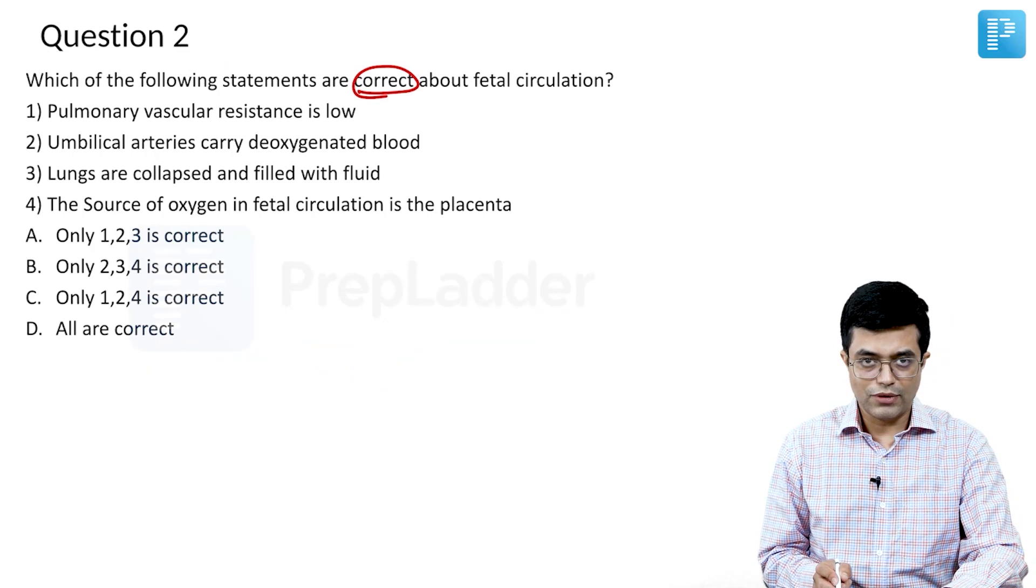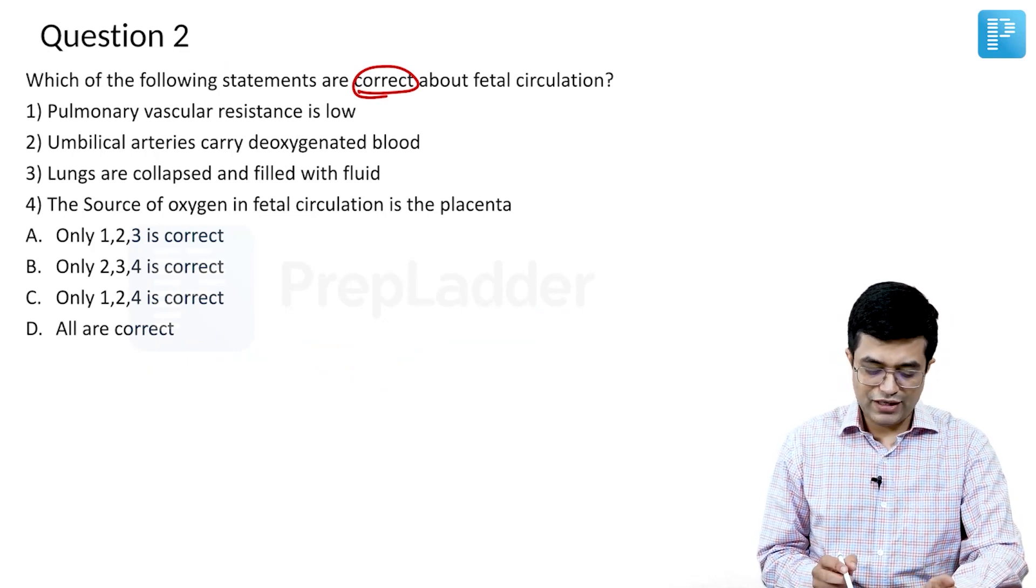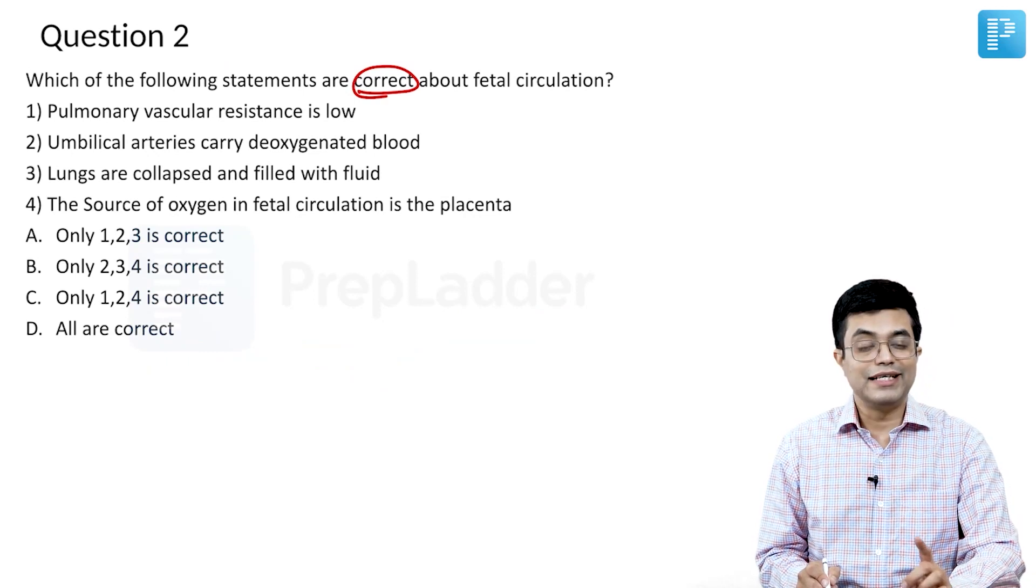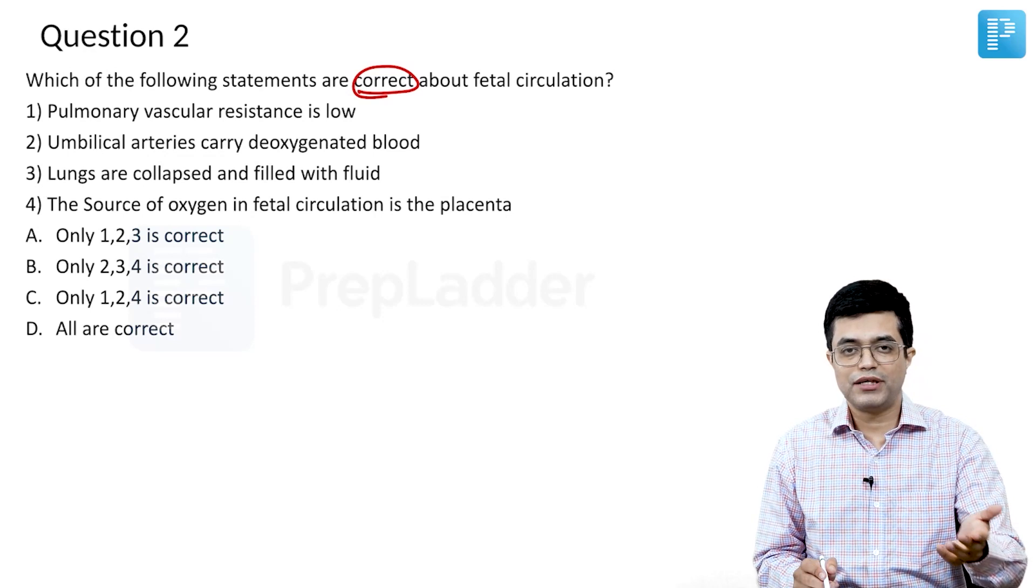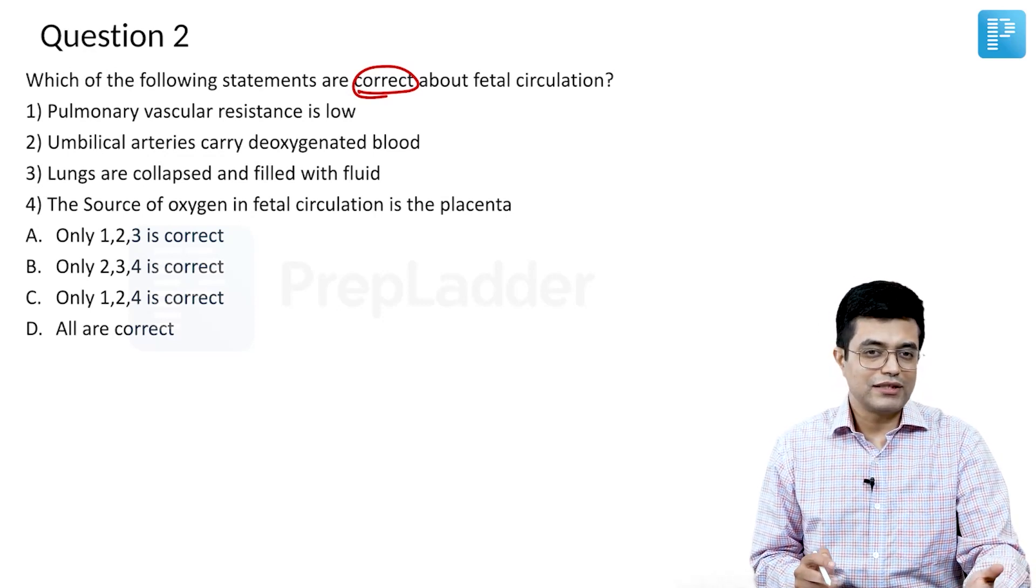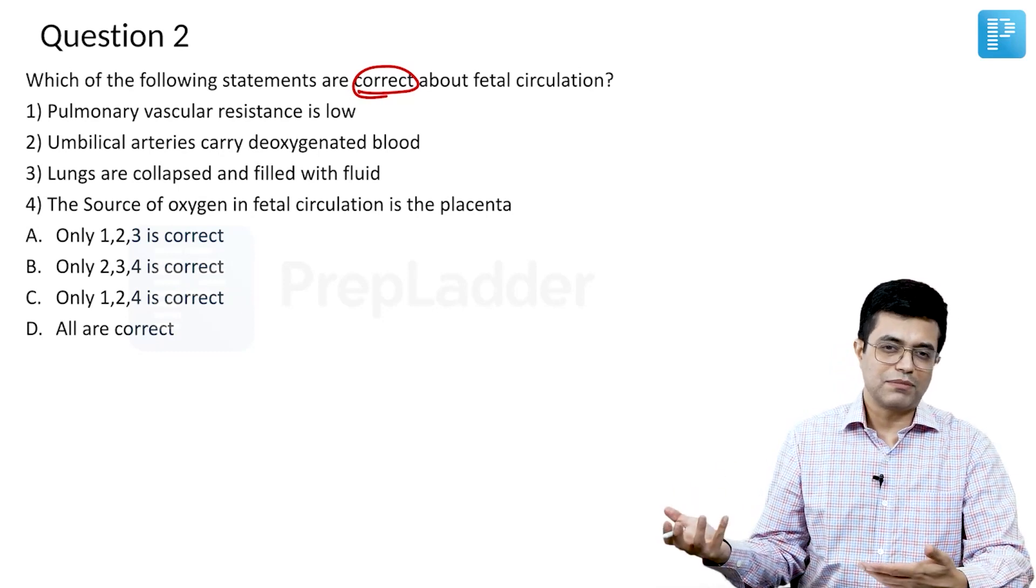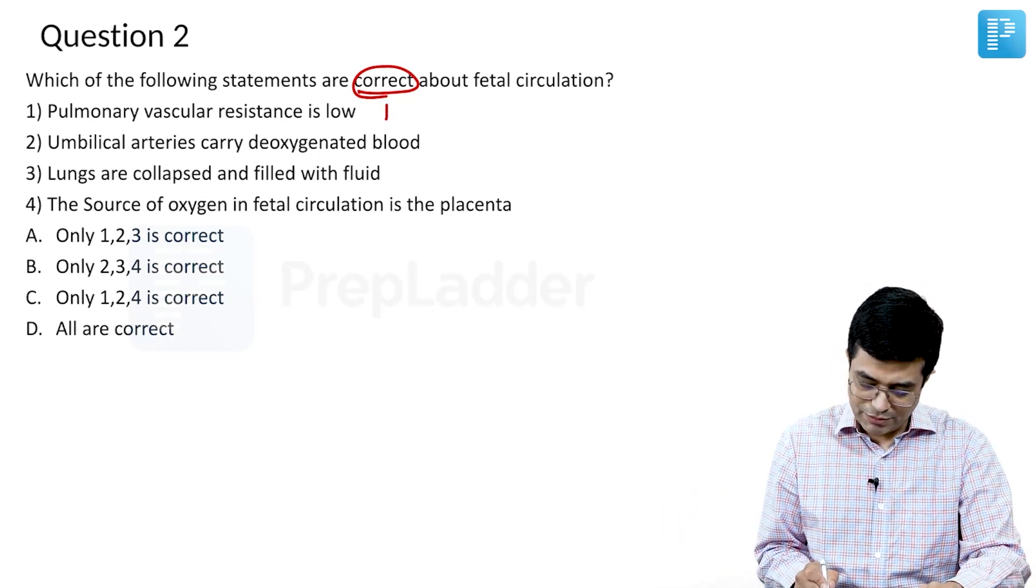Pulmonary vascular resistance is low. It is low in the postnatal age but in fetal life pulmonary vascular resistance is high because lungs are not taking part in gas exchange. So blood supply does not happen to the lungs. The pulmonary vascular resistance being high prevents that blood supply from reaching there. It is a dead end in the lungs. So this is a false statement.